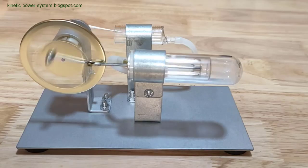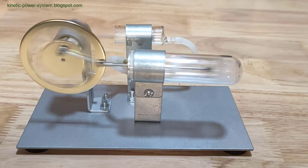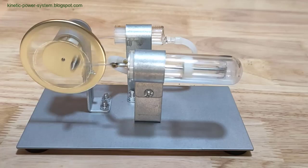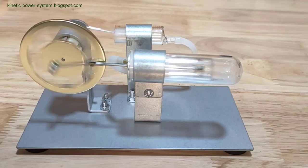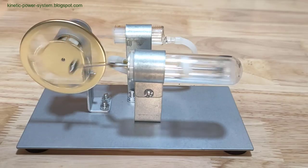Indirect Sources of Kinetic Energy: In addition to direct mechanical applications, Stirling engines are used to generate electrical energy by driving generators. This electrical energy can then be converted into various forms of kinetic energy, expanding the engine's utility.